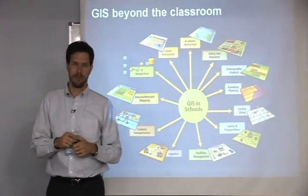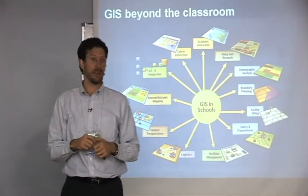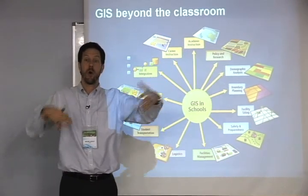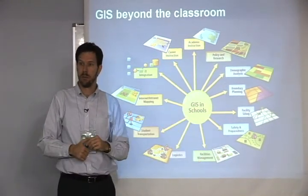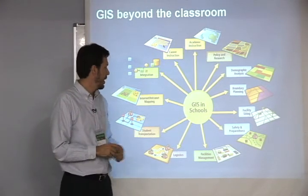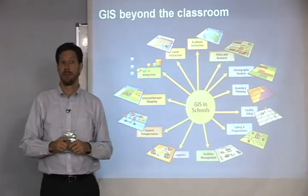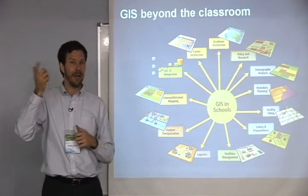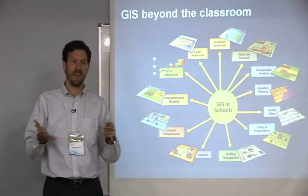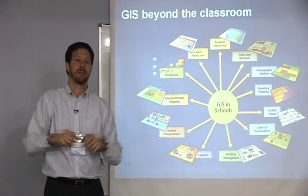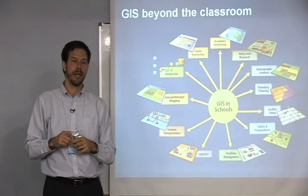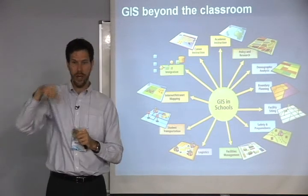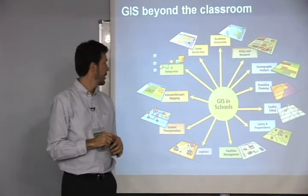Demographic analysis — where are the students, and where will the new students be in five years? Boundary planning — our campus is growing and we need to acquire new land, so where are we going to grow and what's the best plan? Safety and preparedness: nearly all university campuses in the world are now thinking about having a safety plan. Evacuation, transportation — some campuses even have three-dimensional models of every building showing the way in and the way out. You can do that with GIS.